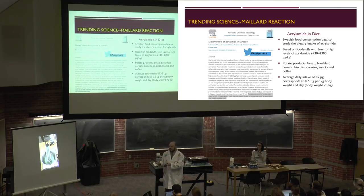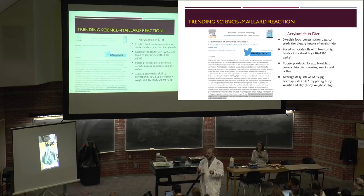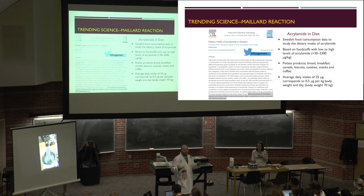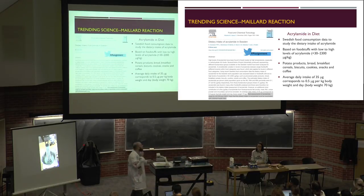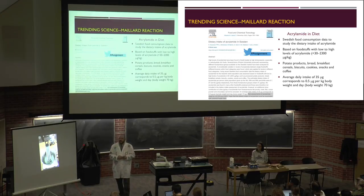There is very little acrylamide in a single serving of chips or french fries, but the Maillard reaction occurs across so many food products that when you account for all the acrylamide consumed daily, you can exceed the EPA and World Health Organization recommendations — levels associated with detrimental health effects. Chronic consumption of foods heated to high temperatures with reducing sugars and asparagine can actually be carcinogenic over a lifetime.